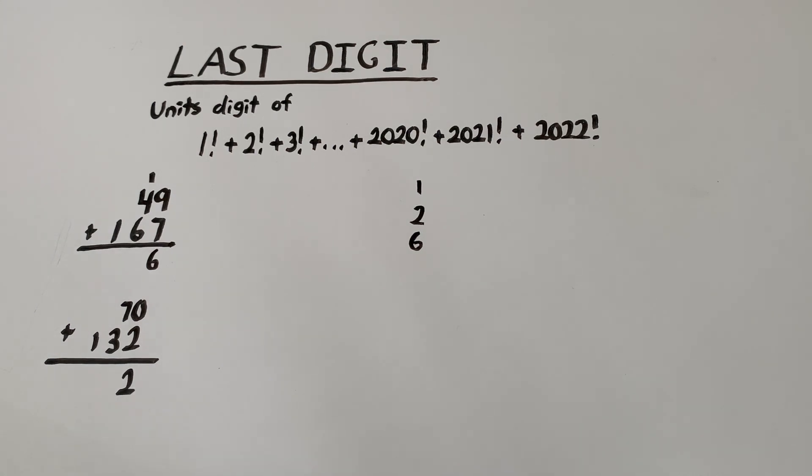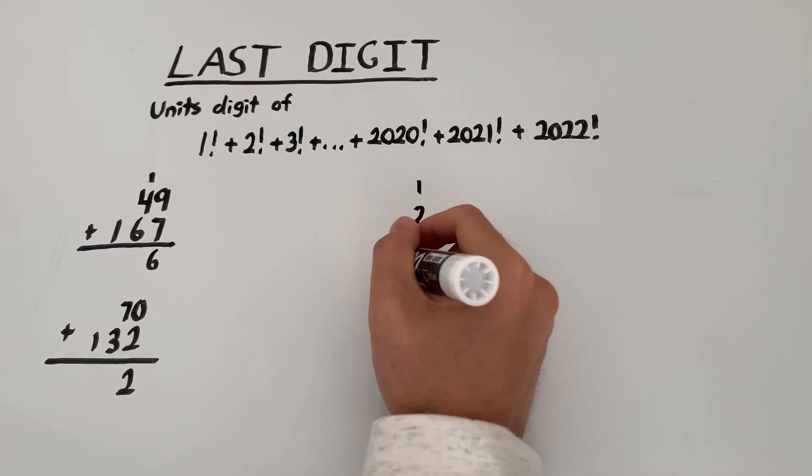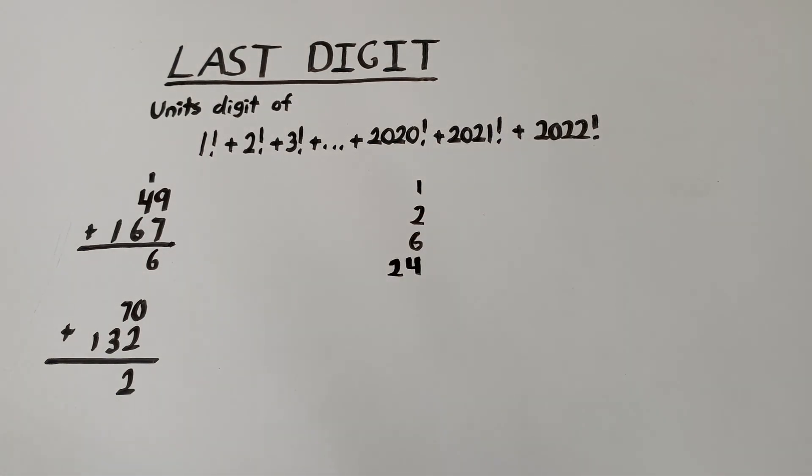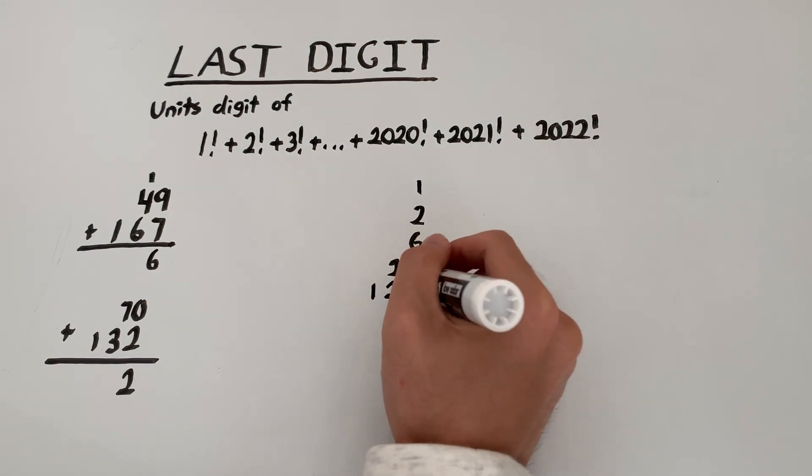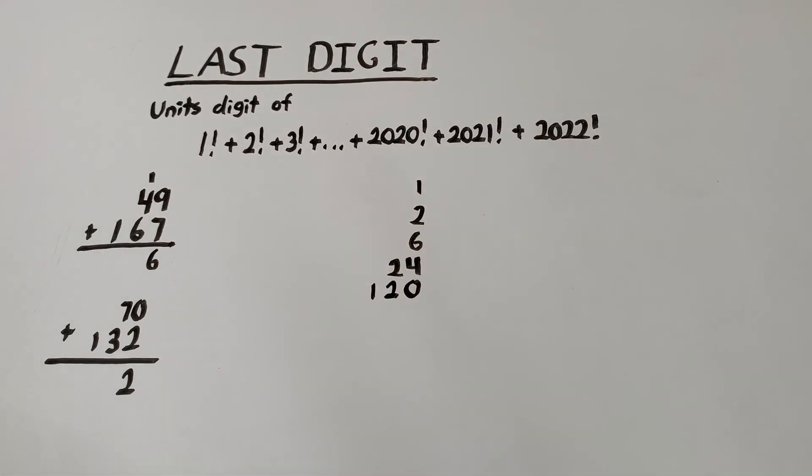4 factorial is 24. 5 factorial is 120. 6 factorial is 720.